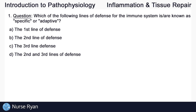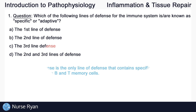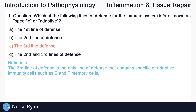Starting off with question number one: which of the following lines of defense for the immune system is or are known as specific or adaptive? The answer here is C, the third line of defense. The third line of defense is the only line of defense that contains specific or adaptive immunity cells such as B and T memory cells.